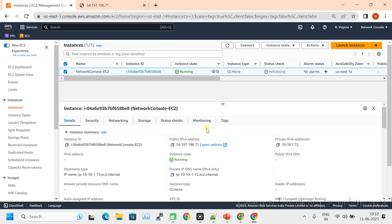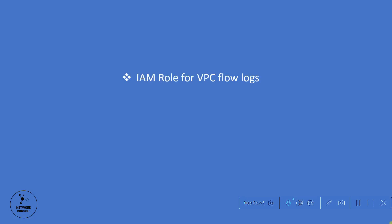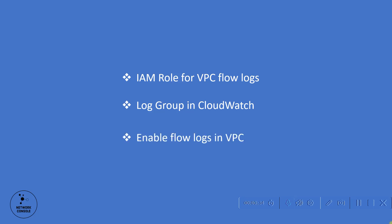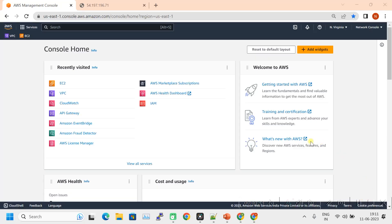Now let's do our actual work. Before configuring VPC flow logs, let me show you the steps. These are the three basic steps we are going to follow: first, create an IAM role for VPC flow logs; second, create a log group in Amazon CloudWatch; and third, enable flow logs in the VPC.